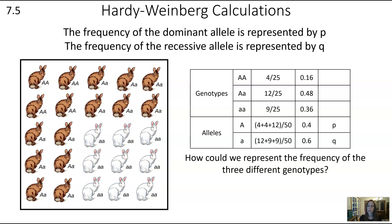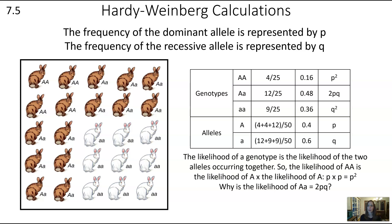To do calculations, instead of always using numbers, we use variables. We represent the frequency of the dominant allele with lowercase p, and the frequency of the recessive allele with lowercase q. If we know that p is the dominant allele frequency and q is the recessive allele frequency, we can represent the frequency of the three different genotypes. Those three genotypes are represented by p squared, 2pq, and q squared. The likelihood of a specific genotype is the likelihood of the two alleles occurring together, so the likelihood of big A big A is p times p, which is p squared.